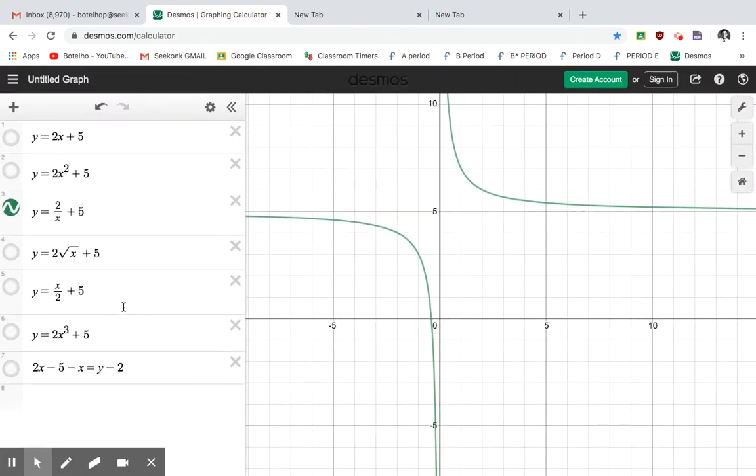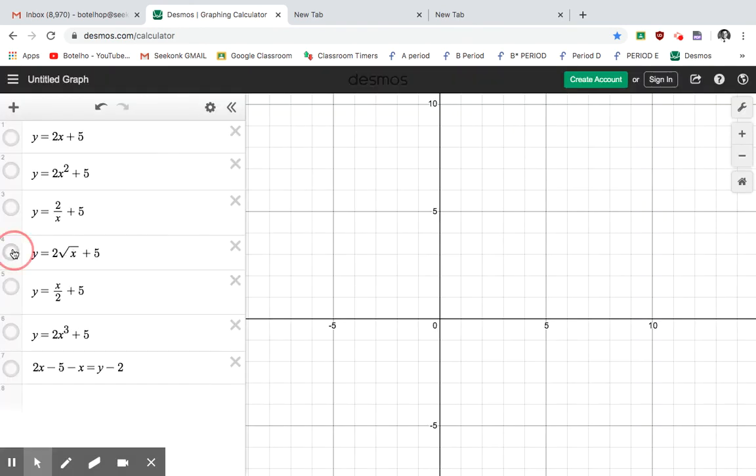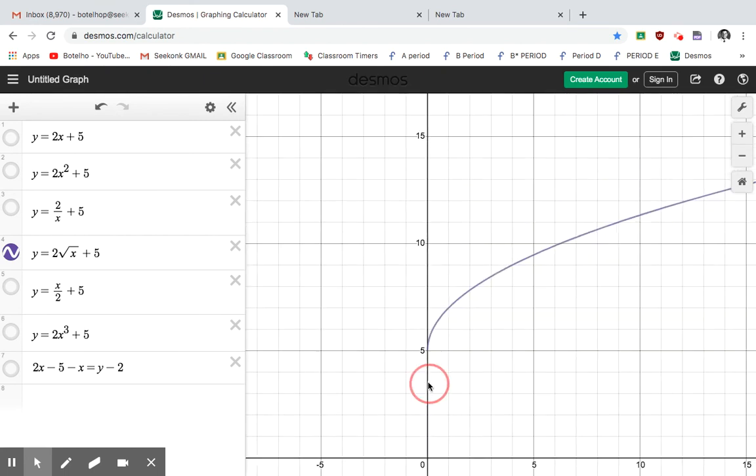So again, straight line x in the numerator, curvy line when x is in the denominator. Going on to some other examples, let's see what happens when you get a square root of x. It's not going to be straight, it's going to be like a little curve like that.